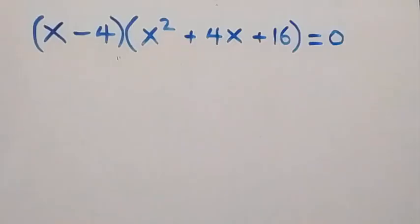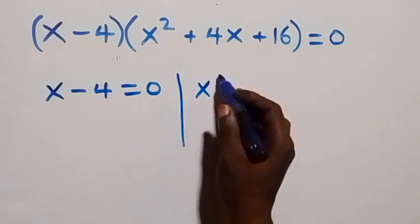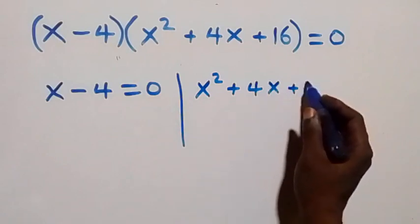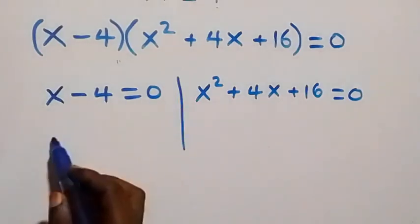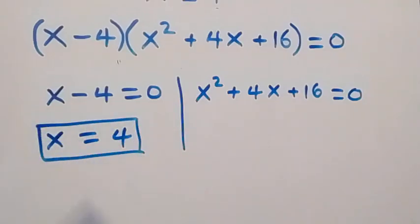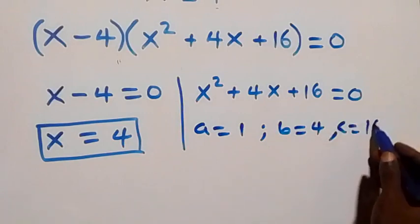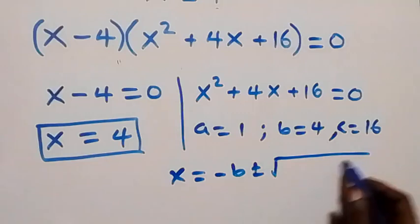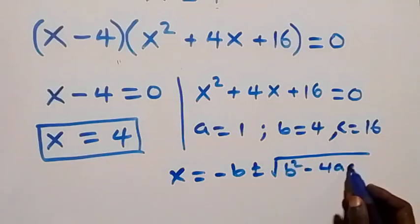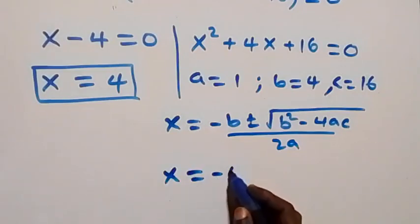We have two cases: x minus 4 equals 0, or x squared plus 4x plus 16 equals 0. For the quadratic, applying the quadratic formula: x equals negative 4 plus or minus the square root of 4 squared minus 4 times 1 times 16, all over 2 times 1.